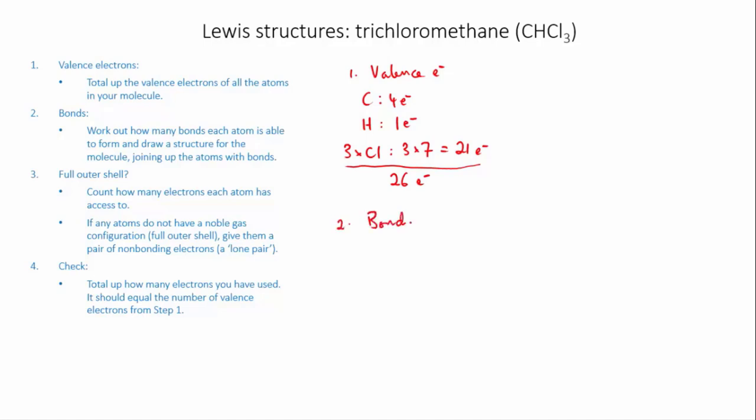Next I look at bonds. Carbon, which is in group 4, will form 4 bonds. Hydrogen forms only 1. And chlorine is in group 7, which means it has a valence of minus 1, so it likes to form 1 bond as well. So each of the chlorines is going to form 1 bond.